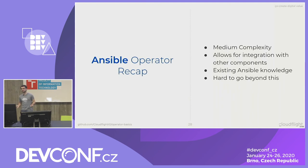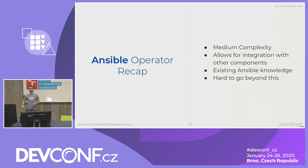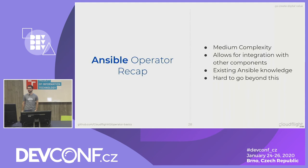To integrate using the Ansible operator, you specify default values the same way as standard Ansible, use them as any top-level Ansible variable, and can also access object metadata using the top-level meta object — for example, accessing labels from Ansible. All those values will be replaced by what you specify in the custom resource. To recap the Ansible operator: it's best suited for medium complexity, allows integration with other components, and if you have existing Ansible knowledge in your organization you can reuse existing playbooks. The limitation is that if you want to go beyond what Ansible can do, at that point it might just be simpler to switch to the Go operator.